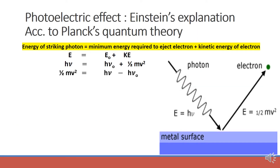Now we understand the photoelectric effect according to Planck's theory. Einstein applied this quantum theory to explain the photoelectric effect. He explained that when a photon of certain specific energy strikes the surface of a metal, only then will electrons be ejected. This certain amount of energy required to eject an electron is called threshold energy, represented as E₀. If the striking photon has energy greater than this threshold energy, the electron will acquire a specific kinetic energy.